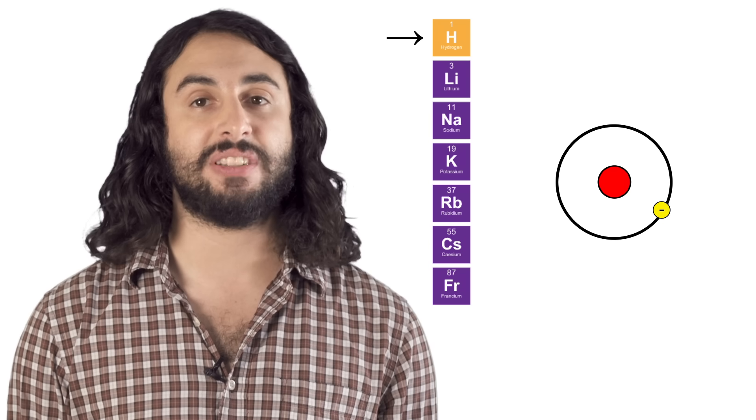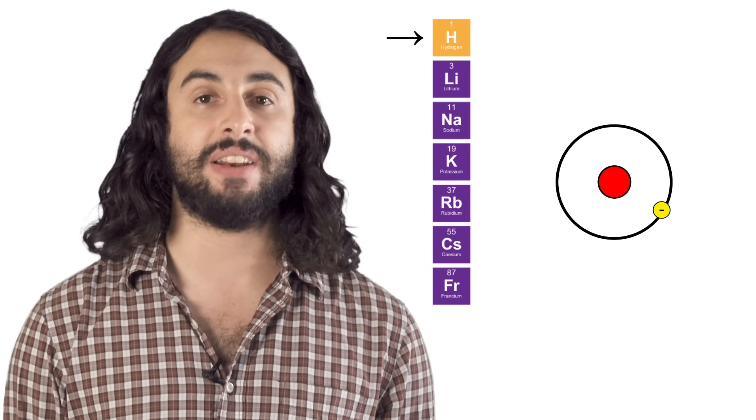Look at group one for example. These elements all have one valence electron, or one electron in their outermost shell.